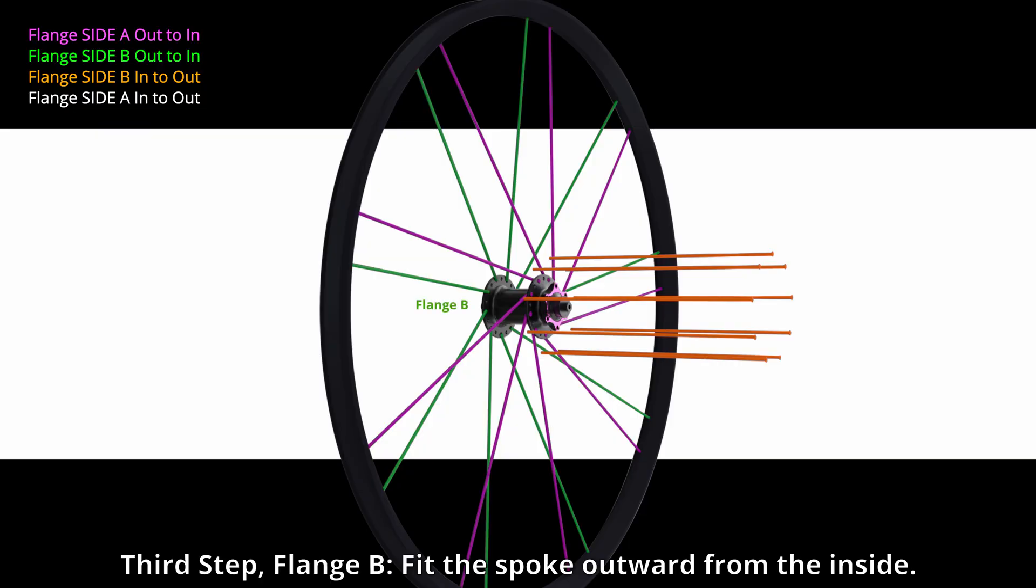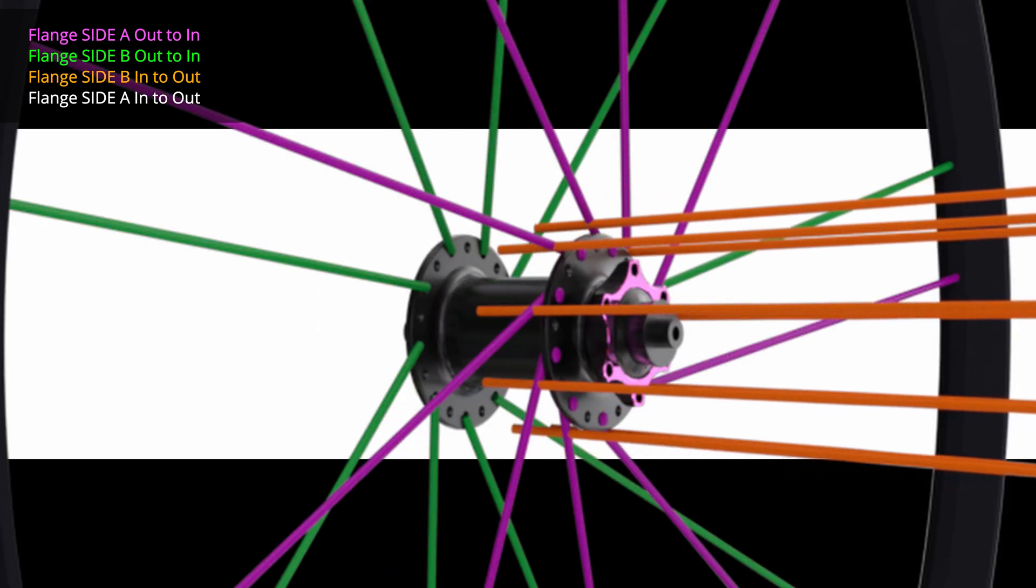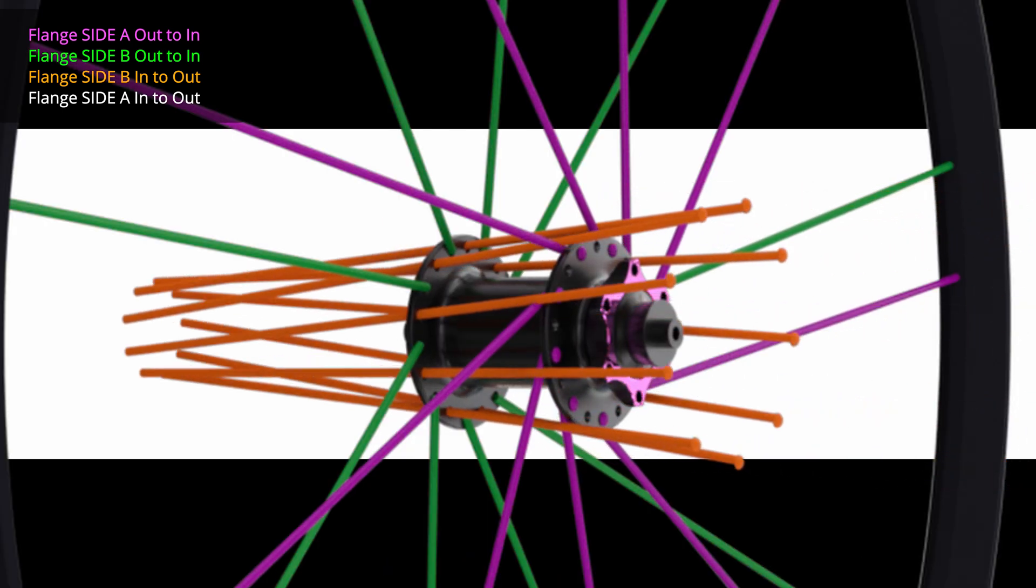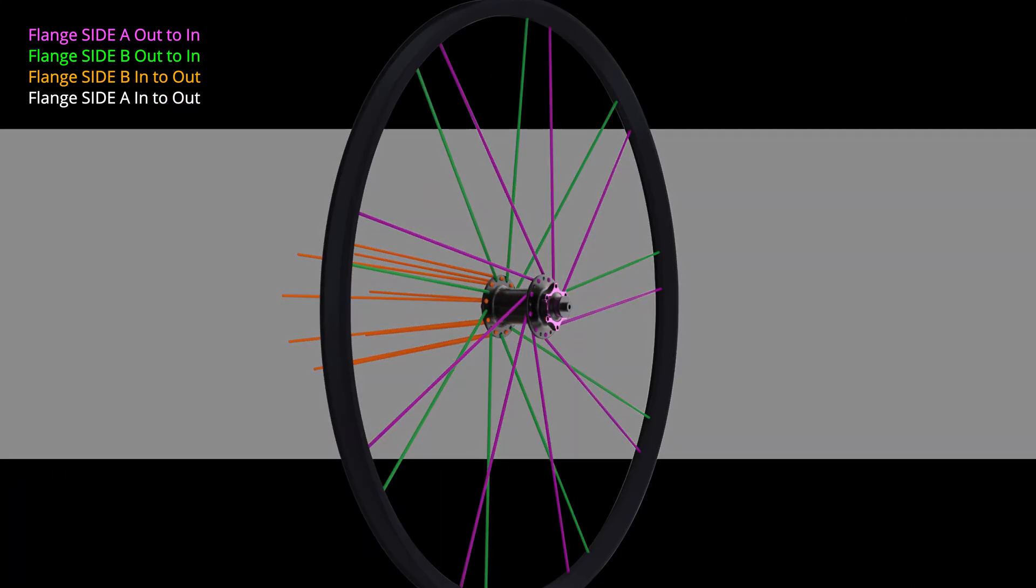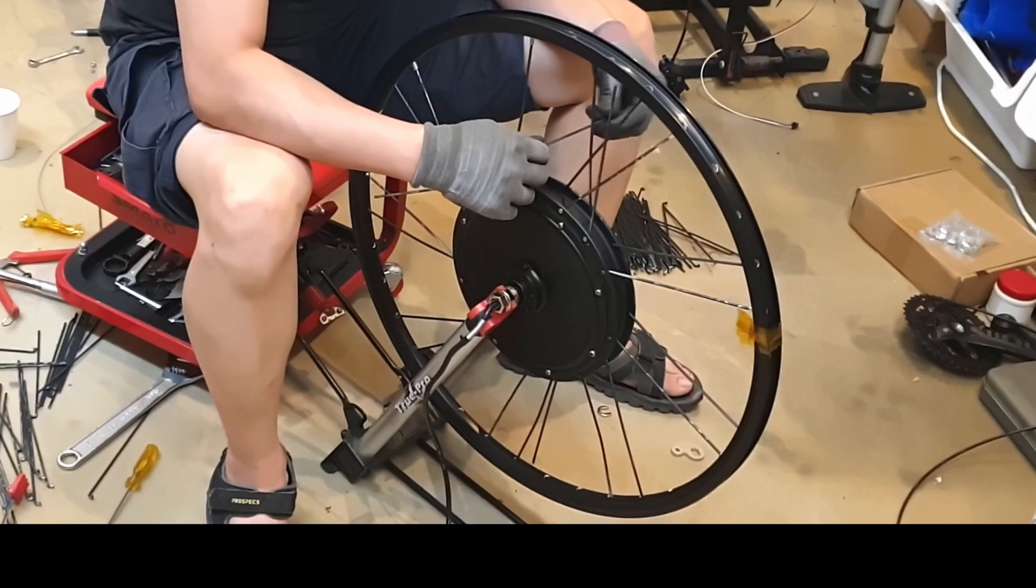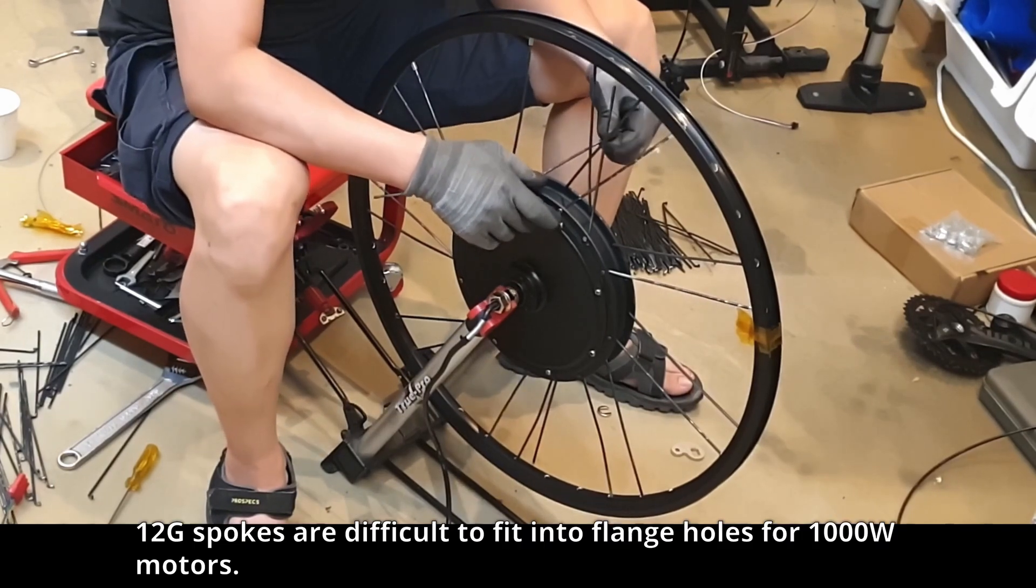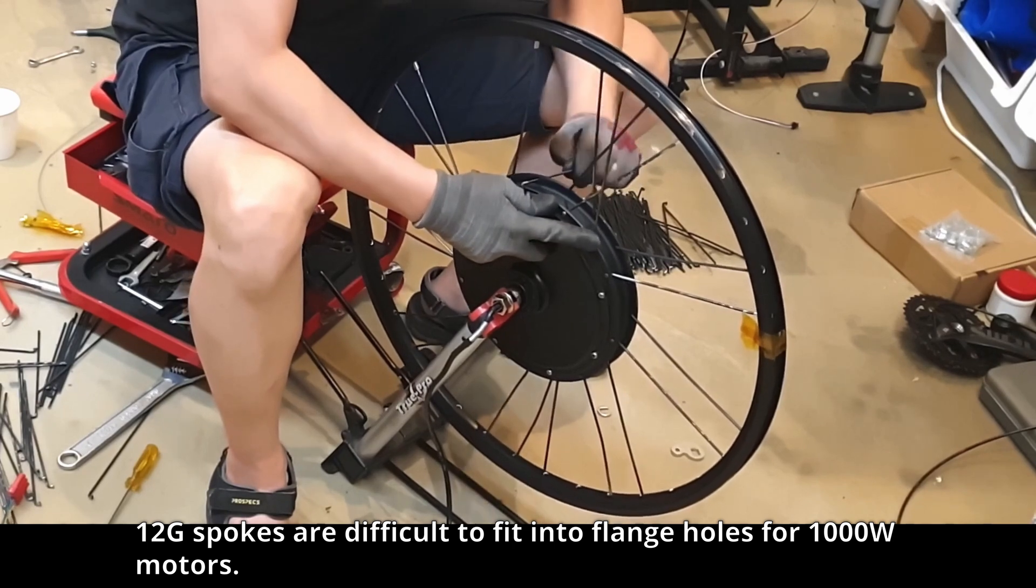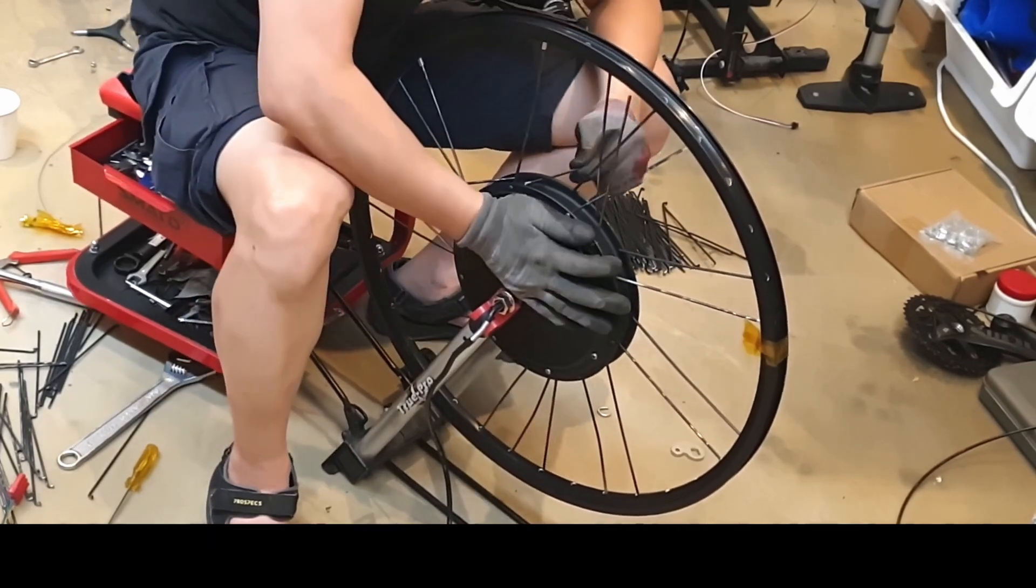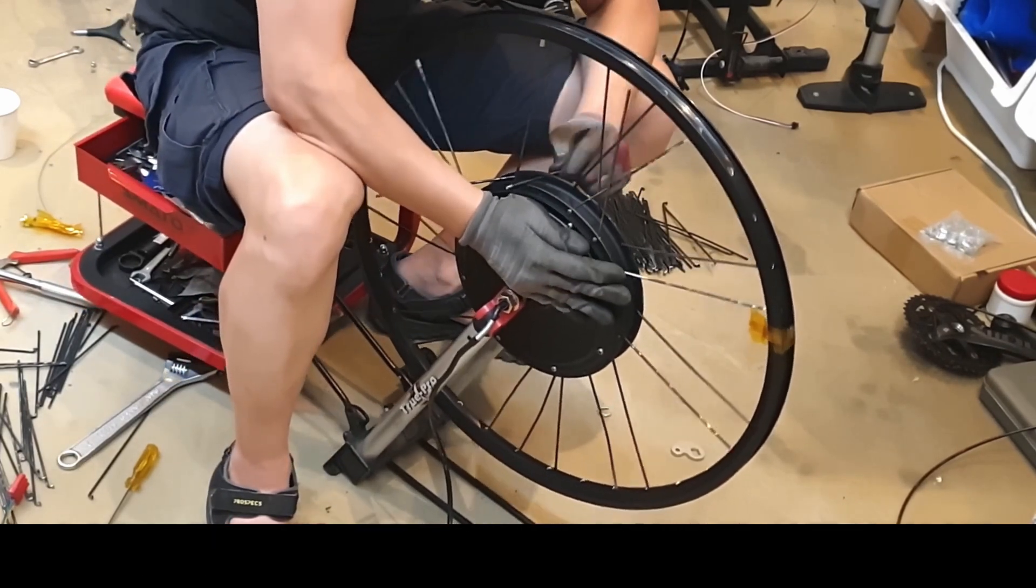Third step: flange B, fit the spoke outward from the inside. 12G spokes are difficult to fit into flange holes for 1000W motors. Good job!